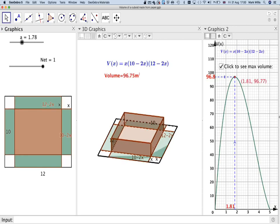If I set this at 1.81, let's do that. This is the point where I get the maximum volume of the box if I cut a square out of a 10 by 12 centimeter piece of paper.